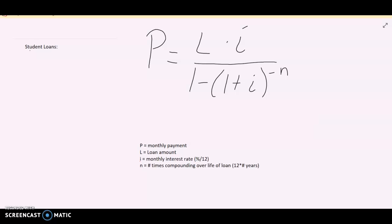Now, the key at the bottom here, P is our monthly payment. So if we want to find on our student loan how much we're going to pay per month, this is our formula. Capital L is the loan amount, what are we trying to pay back. I is the monthly interest rate, that's monthly. So whatever the APR is, we're going to have to divide that by 12 in order to find I.